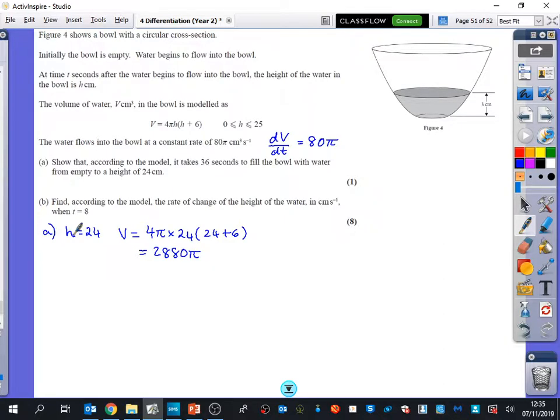But we now want to know how long it takes for that to go up to it. So the time that it will take is 2,880π divided by 80π, because that's how much water is going in every second. The π's cancel and it simplifies down to 36 seconds. That's just part A for one mark.